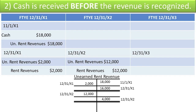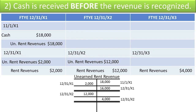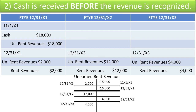In the next year, we have to record another adjusting entry to show that we've now earned $4,000 and thus reduce the remaining liability. Let's post that to the ledger account. We show that at the end of this year, we owe nothing more to this tenant, and this deferred revenue has now been fully realized and recognized on the income statement.